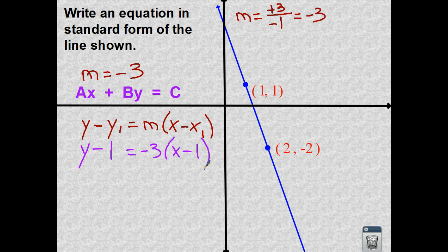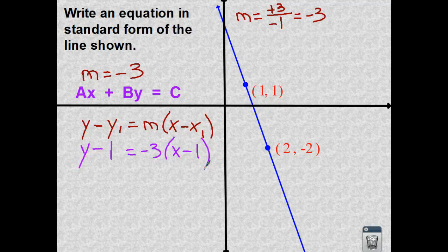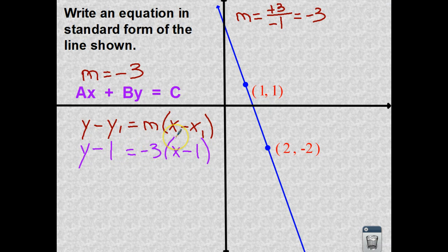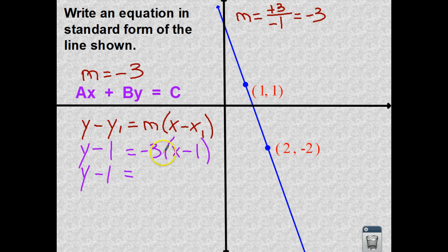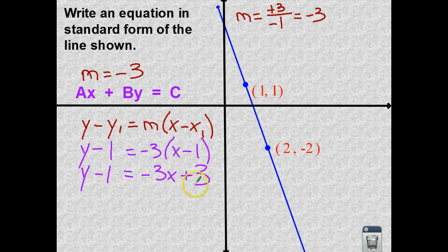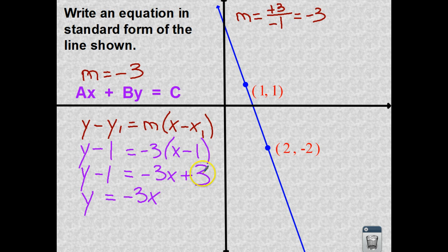So now I'm in point slope form. And what you need to realize is that knowing all of these different forms, we're going to be able to use each of them in different ways to help us figure out these equations of lines. So now we're going to distribute our negative three. Negative three times x. Negative three times negative one. And now I'm going to be looking to combine like terms. So I see that I have a negative one and a positive three that I need to get together. So let's add one to both sides. And I know that positive three added to one is positive four. And that looks familiar.